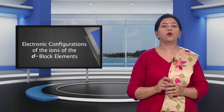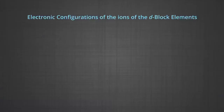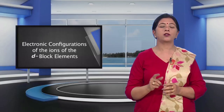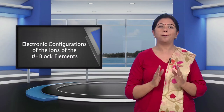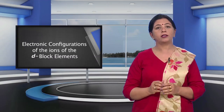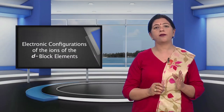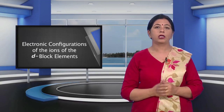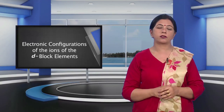For writing the electronic configuration of the ions correctly, you have to keep in mind that in D block elements, the NS electrons are removed before the (N-1)D electrons. This is in contrast to the ions of the main group elements, where the last added valence electrons are lost first. Now let us discuss a few questions.